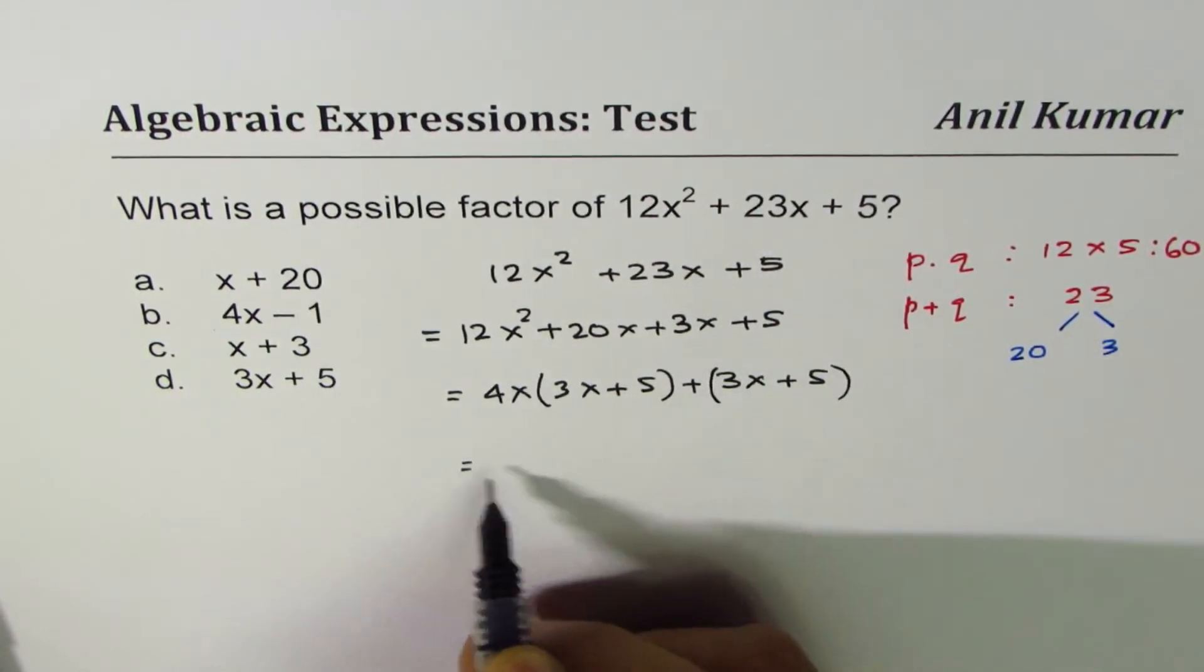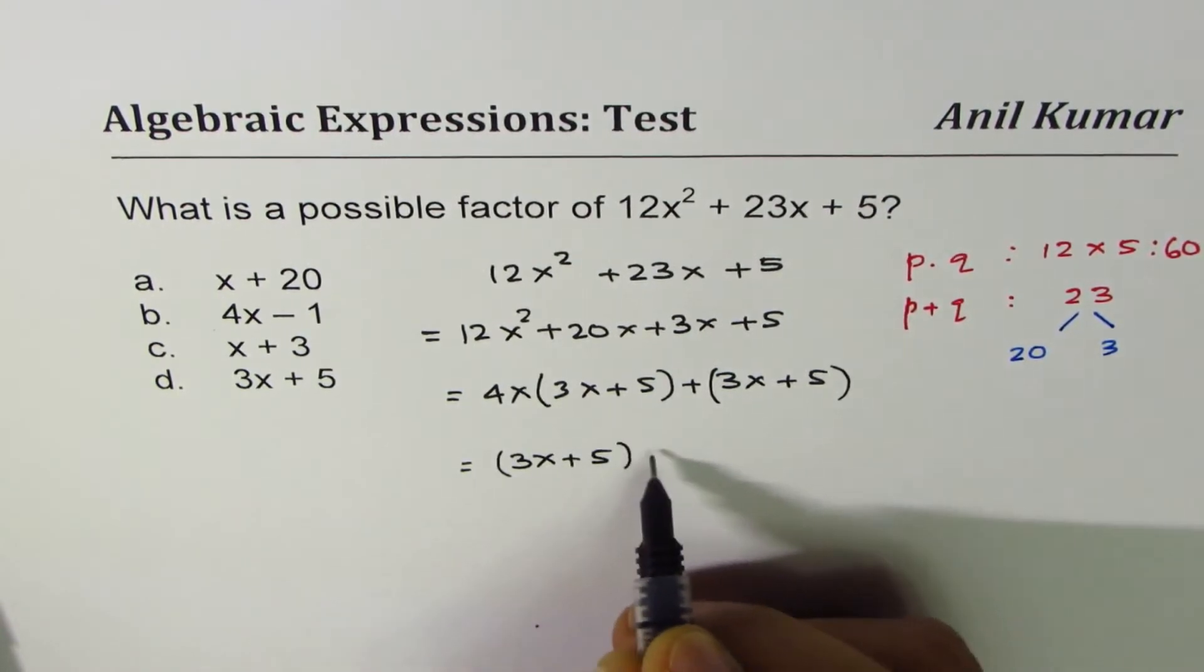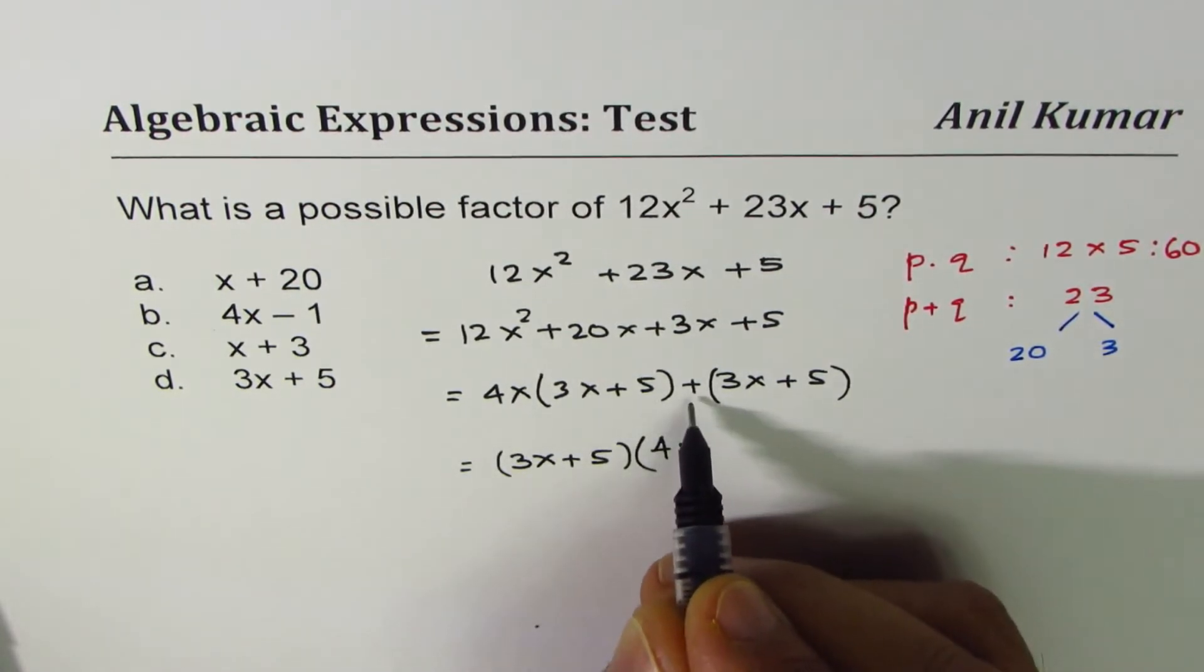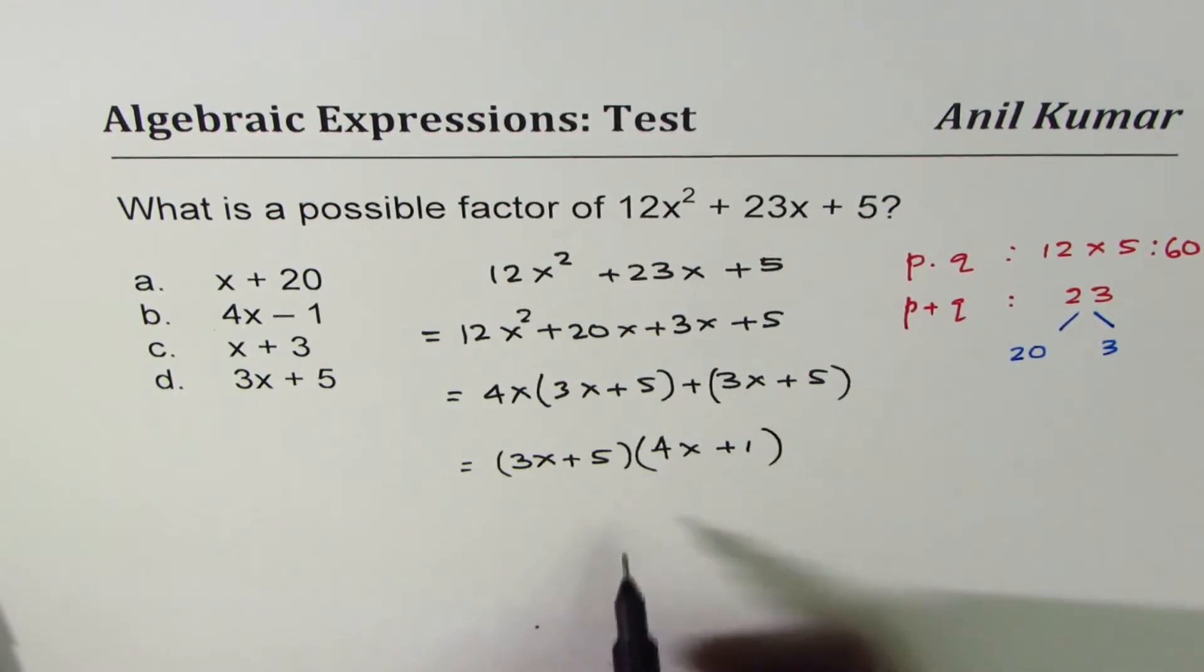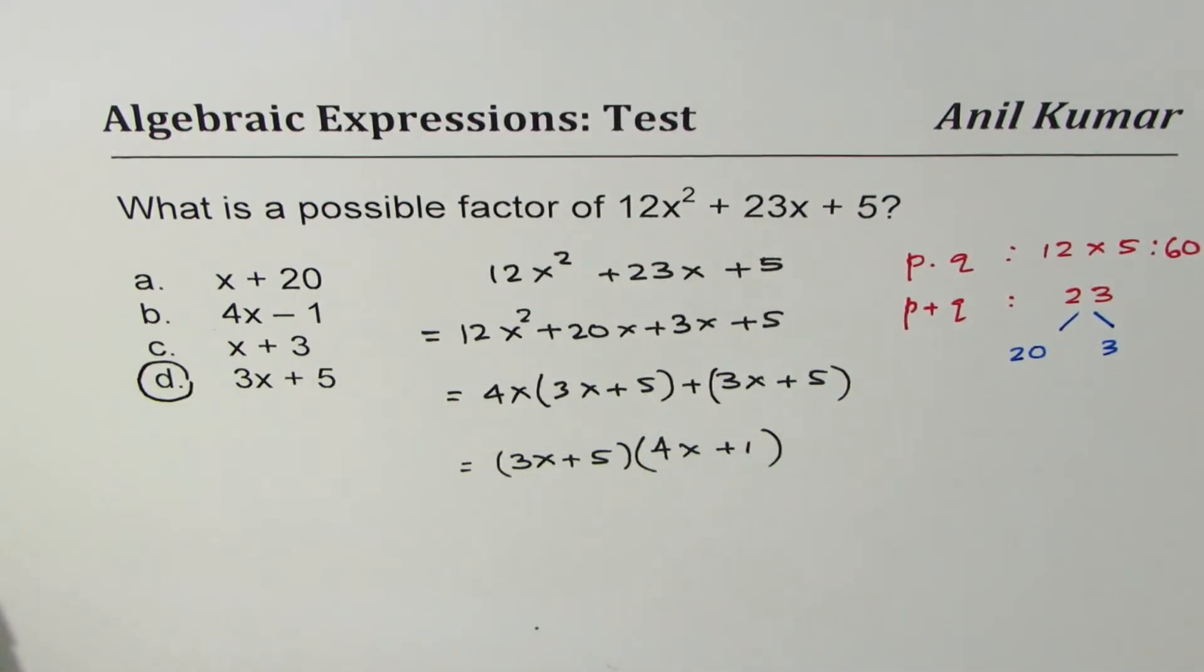Now, 3x plus 5 is a common factor. And we get here 4x plus 1. So the answer here is 3x plus 5 which is the common factor in part D.